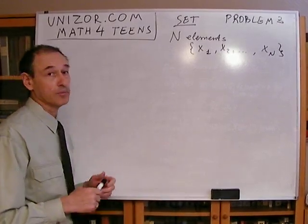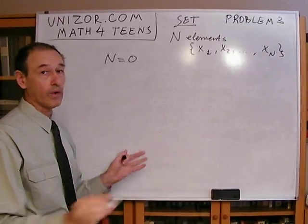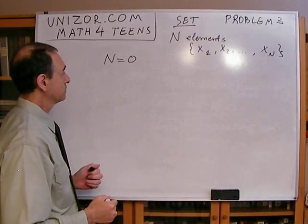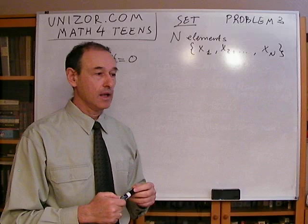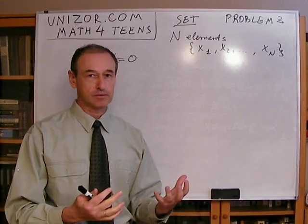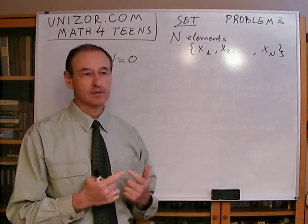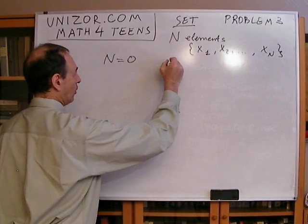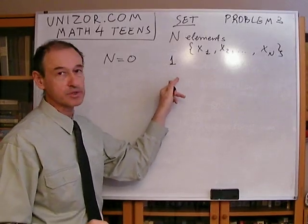Let's first examine a few examples. What if n is equal to zero? That means we have an empty set — no elements at all. How many subsets does this set have? Well, if this is an empty set, it obviously has one subset which is empty, and the subset which is the full set is exactly the same thing — the empty set. So no matter how we count, we have only one subset. For an empty set, we have one and only one subset, which is empty.